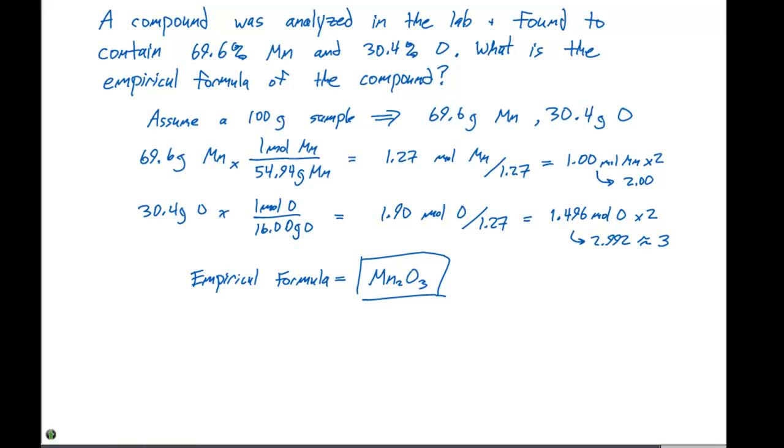To reiterate, we first express the composition in grams. We're not given grams here, we're given percentages, so we're going to assume a 100 gram sample. That gives 69.6 grams of manganese and 30.4 grams of oxygen. We now need to determine the number of moles of each of those elements, so we convert grams to moles.